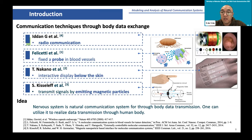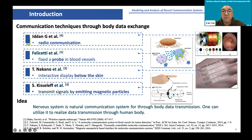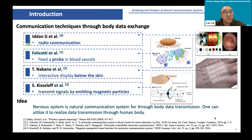Besides wireless communication, Felicity et al. proposed fixing a probe in the blood vessel for through-body data transmission. Tadashi's group proposed transmitting signals by emitting magnetic particles which can change the current of a circuit so data can be transmitted to the outside. These ideas are very good, but sometimes these techniques have difficulties applied to through-body communication scenarios. Our idea is that the nervous system is a natural communication system for through-body data transmission, so we can utilize it to realize data transmission through the human body.